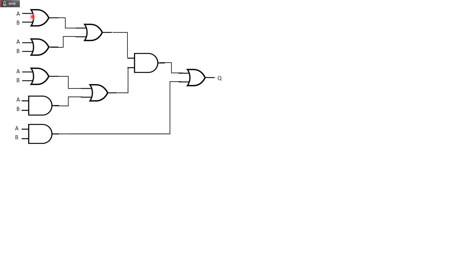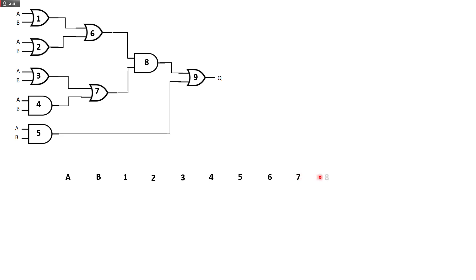Next exercise. We are presented here with a lot more logic gates — we have 1, 2, 3, 4, 5, 6, 7, 8, 9 — so we have 9 logic gates. We still only have two inputs: A and B. We write down our inputs A and B, and we number the gates from top to bottom in each column: 1, 2, 3, 4, 5, 6, 7, 8, 9.